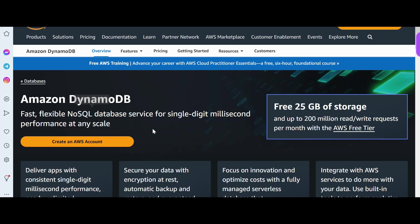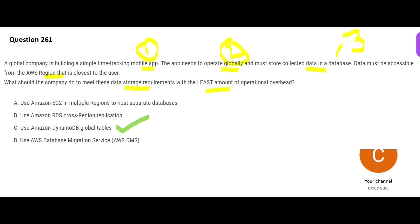DynamoDB is a NoSQL database — in short, a database on steroids. It offers very high performance. It is not the most cost-effective option; it is quite expensive. But it is very useful for applications like Uber and Lyft where real-time processing is needed. It is global, meaning it can be replicated to multiple regions. So if you move to the USA you can still access your data and make bookings — your credentials and login ID will still work.